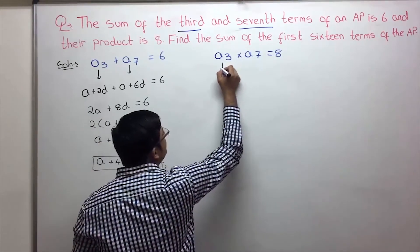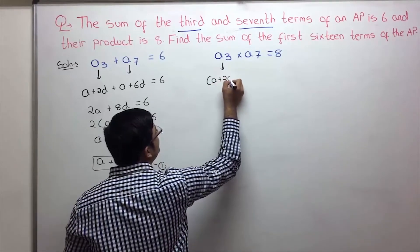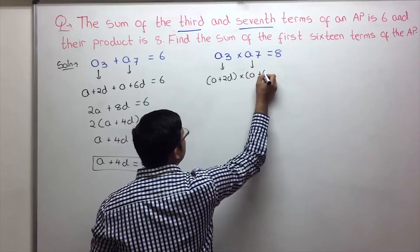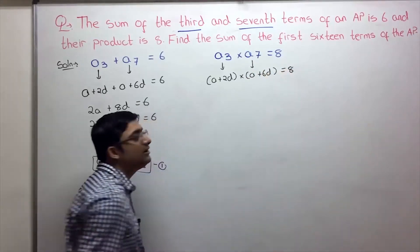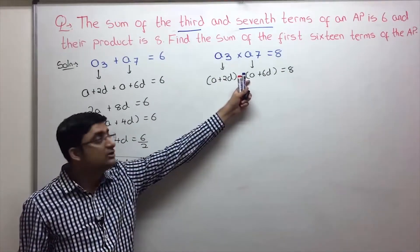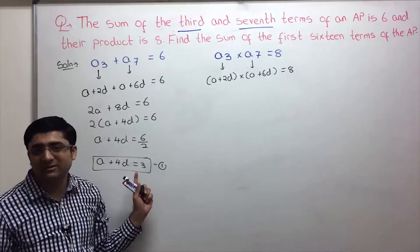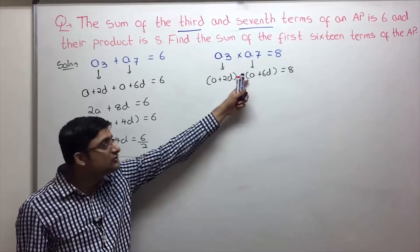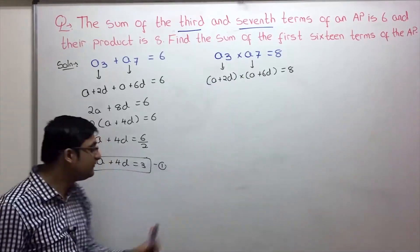Similarly, the product of the third term and seventh term: A plus 2D multiplied by A plus 6D equals 8. When we multiply these two terms we get A squared and so on, which gets complicated. So the best approach is the method of substitution — we'll get the value of A from equation 1 and substitute it here.